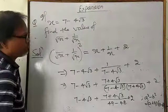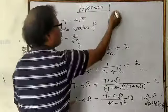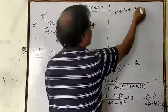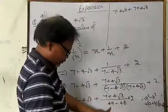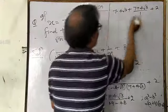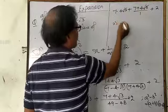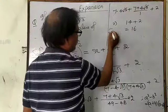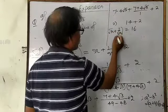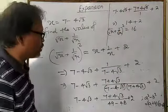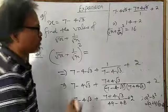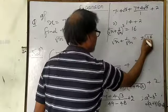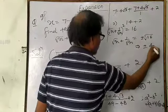Then you have 7 minus 4 root 3 plus 7 plus 4 root 3, all upon 1, plus 2. In this case the 4 root 3 terms cancel, 7 plus 7 is 14, and plus 2, so this is equal to 16. This is the value of root x plus 1 upon root x, whole squared. But you have to find only root x plus 1 upon root x, so take the square root: the answer is plus or minus 4.